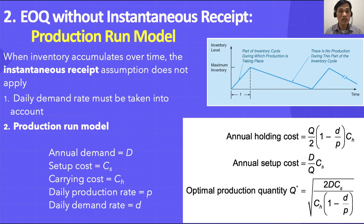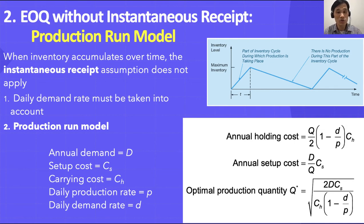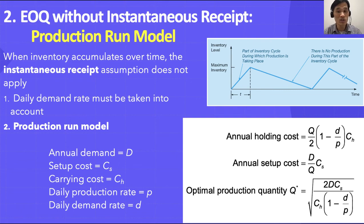For this model we use a different formula. The annual holding cost is (Q/2) × (1 − d/p) × Ch, where d is daily demand, p is daily production, and Ch is the carrying cost. The annual setup cost is (D/Q) × Cs — the same as before. What changes is that the holding cost is now affected by daily demand and daily production.